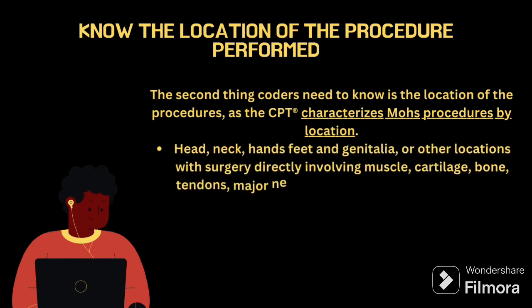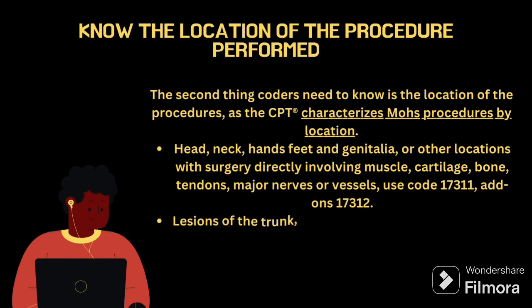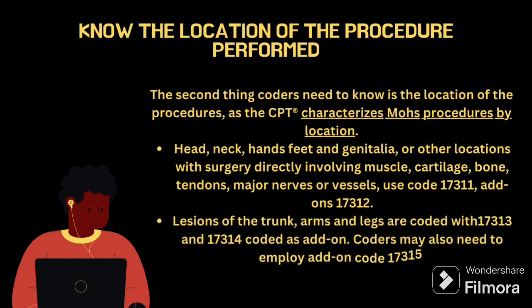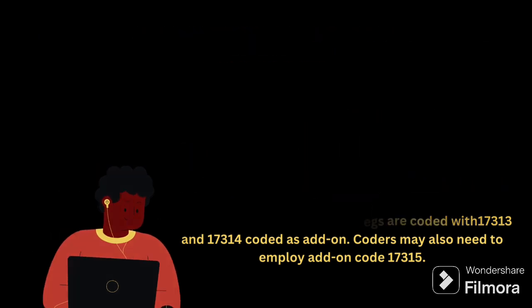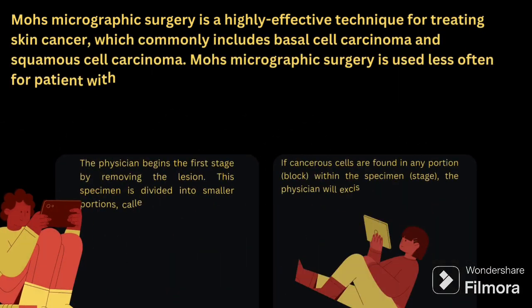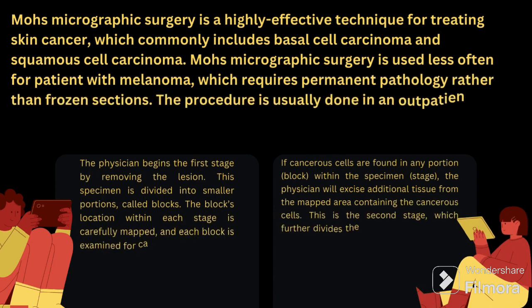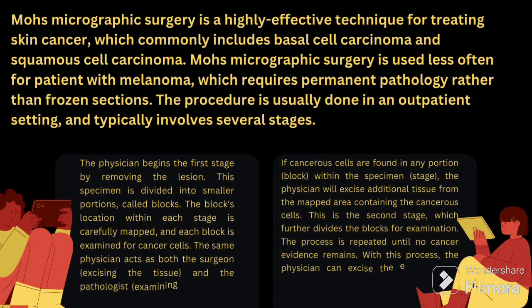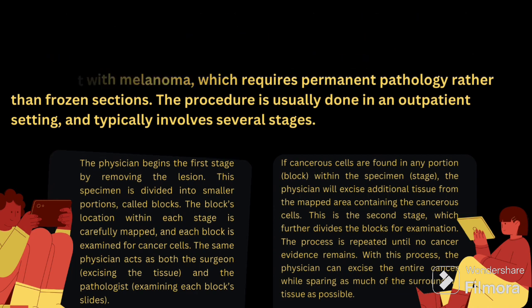For coding this Mohs surgery, the main important things are: first, you have to know about the location; second, you have to see how many stages are being removed; and third, you have to see how many blocks are removed from each stage. The location is clearly mentioned, and when entering the code sets, you have to check the anatomical part, then how many stages are removed, and from the stages how many blocks are removed.